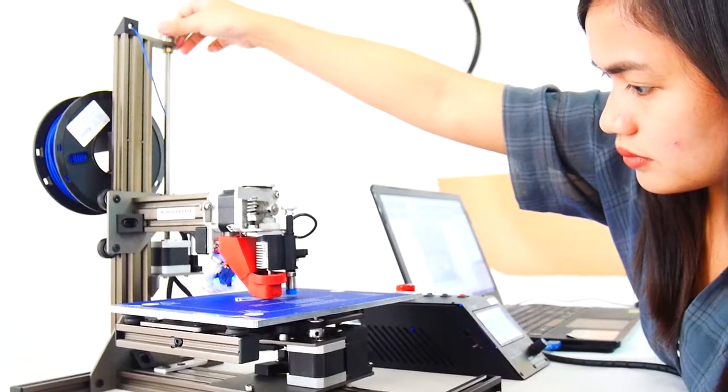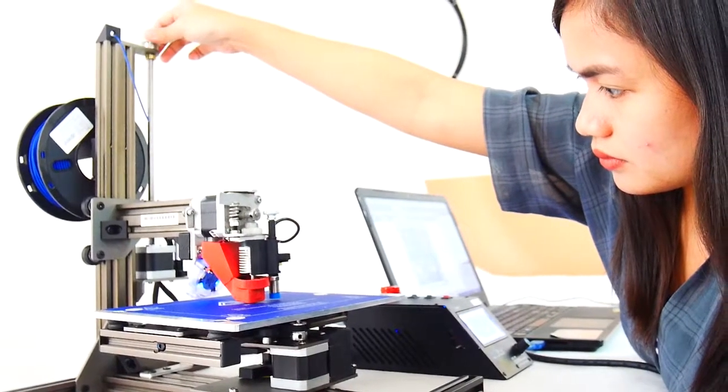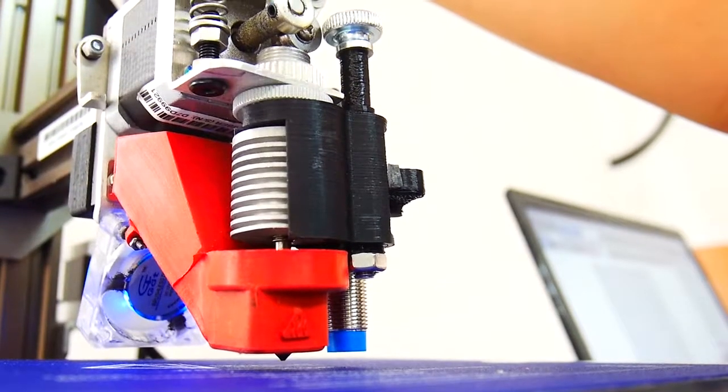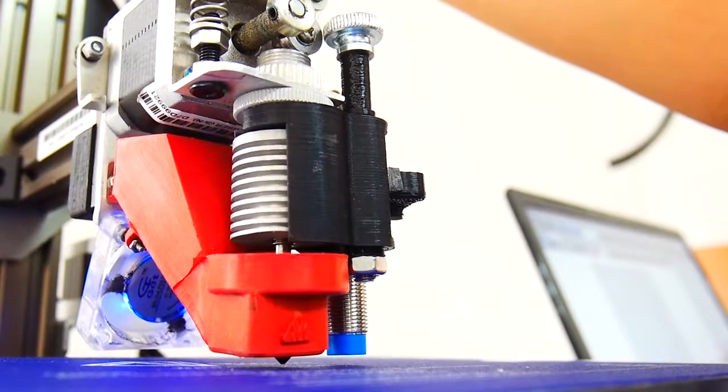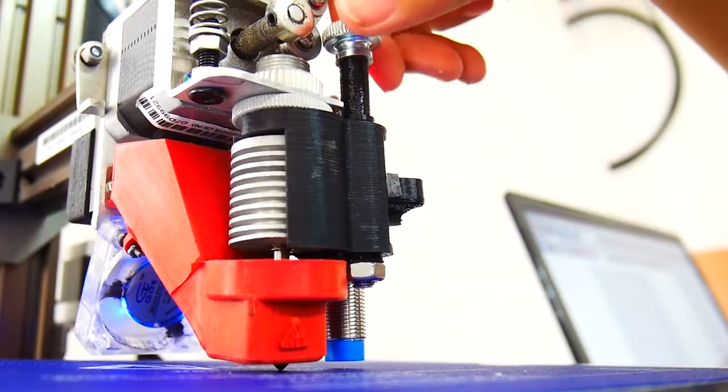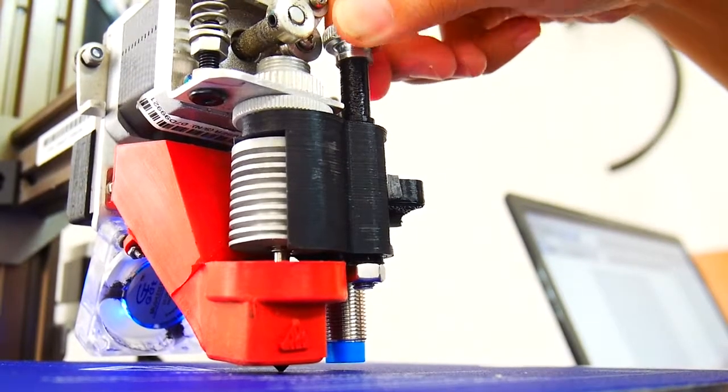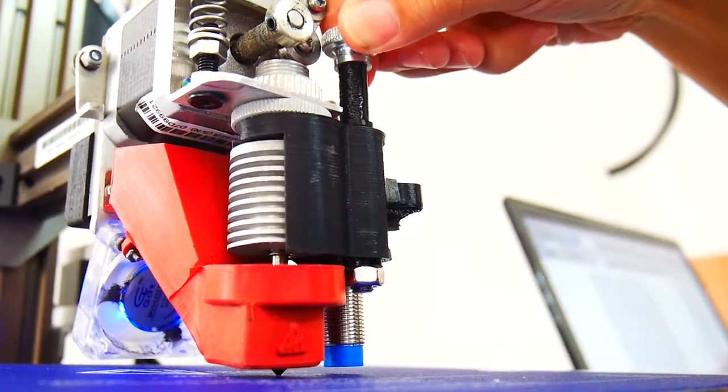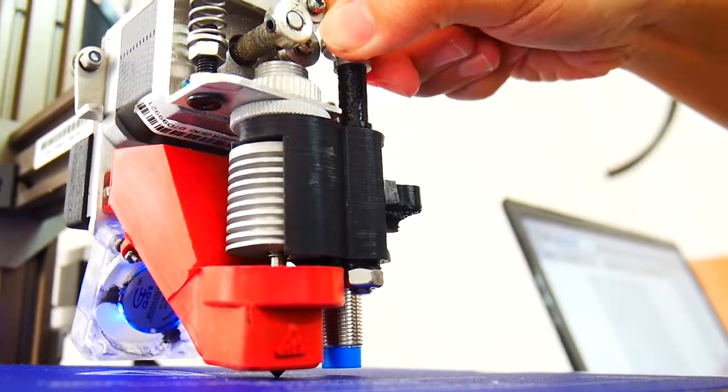Move the extruder downwards where the nozzle tip touches the print plate by rotating the Z-axis knob counter-clockwise. Next, rotate the auto-level module's knob counter-clockwise to move it down and clockwise to move it up until the sensor is lit up.